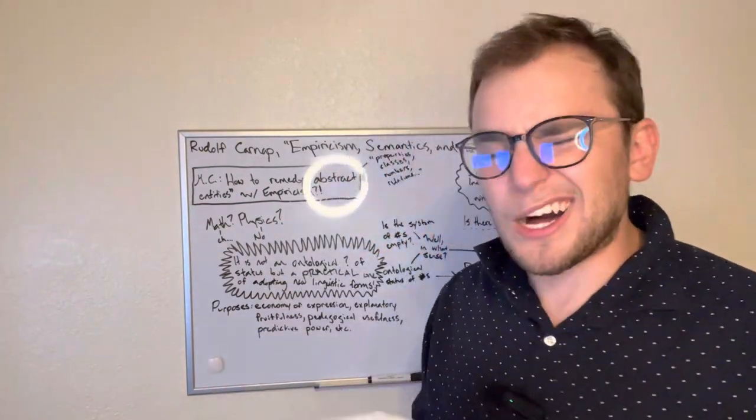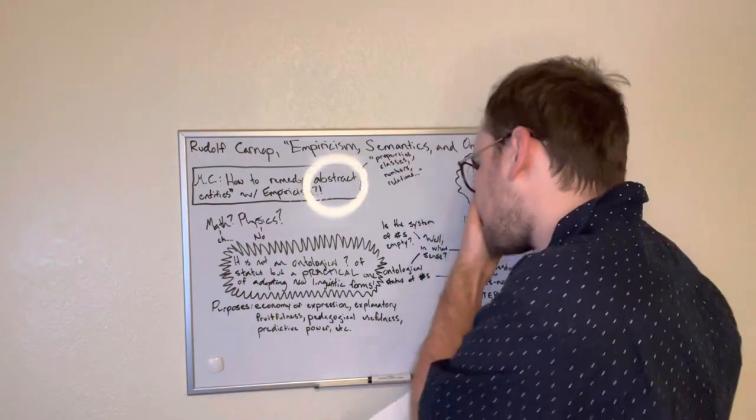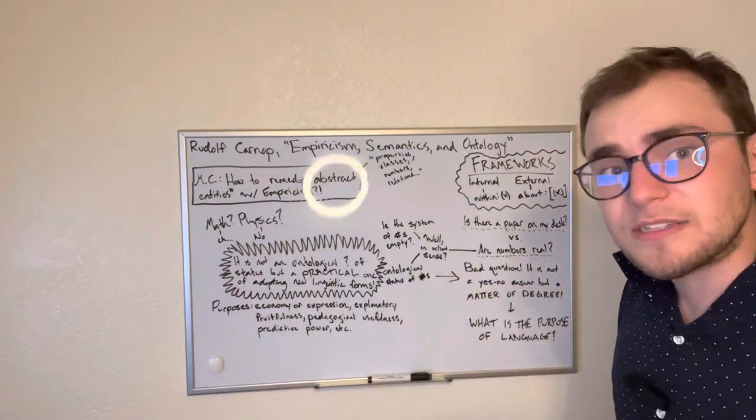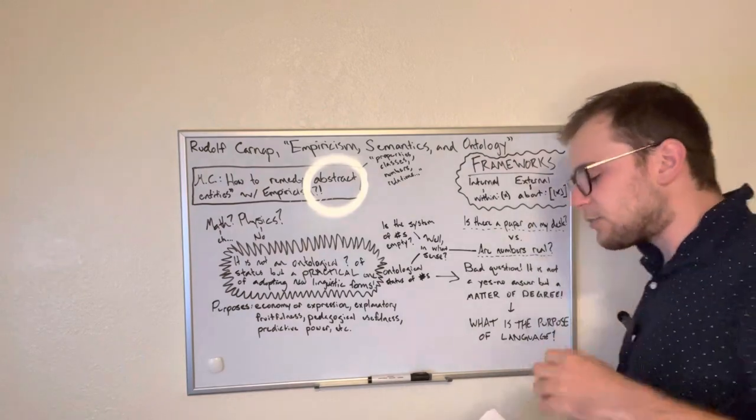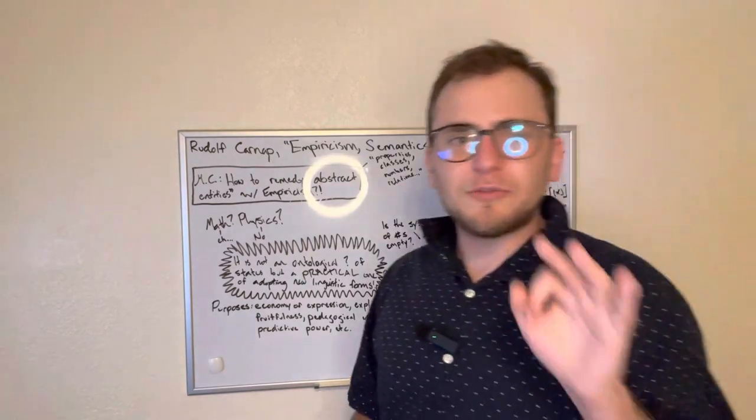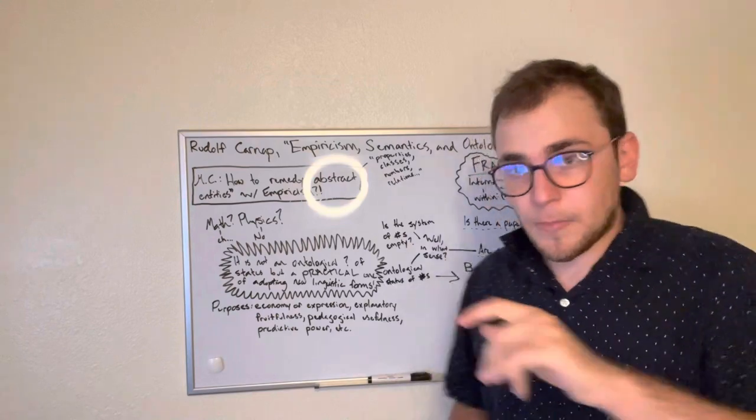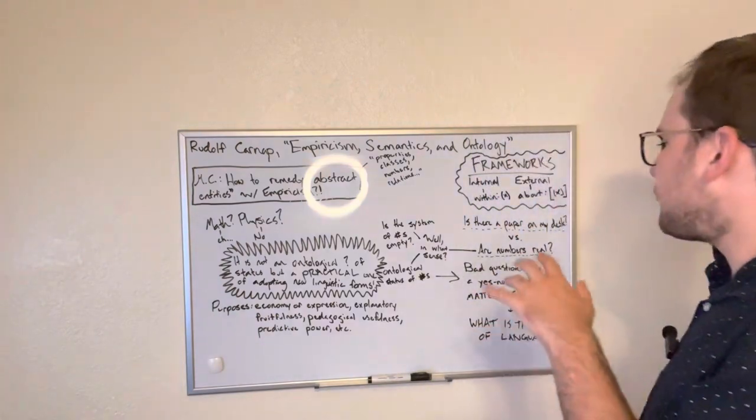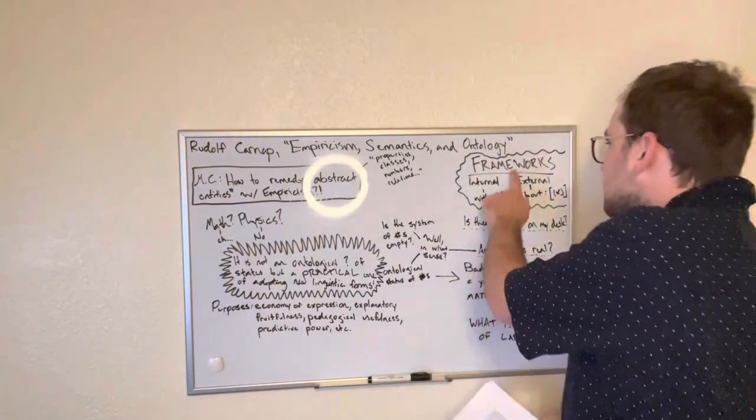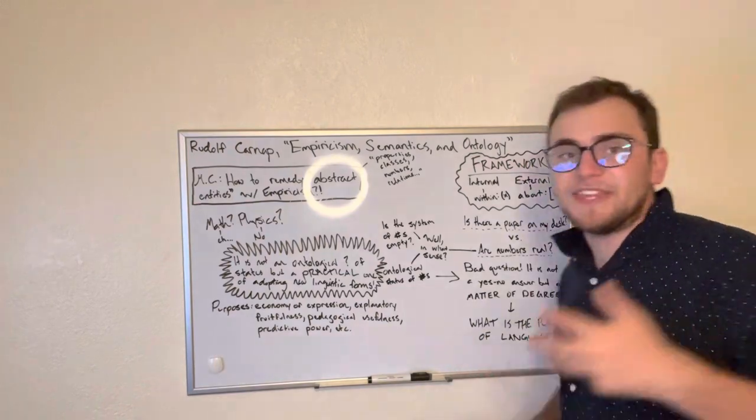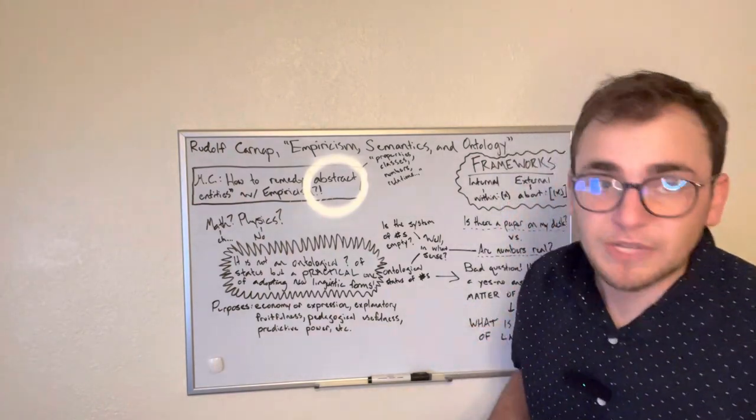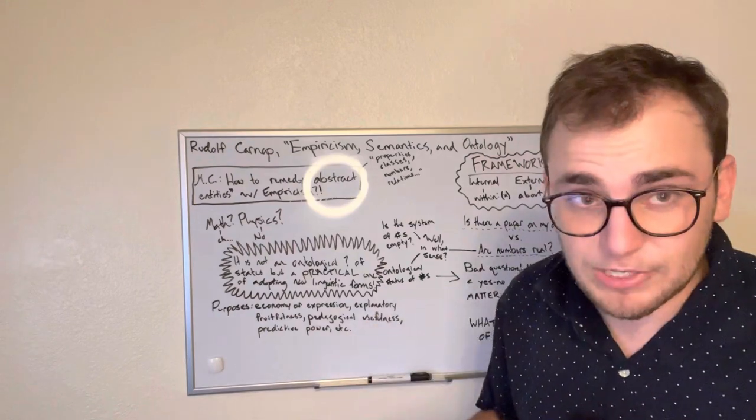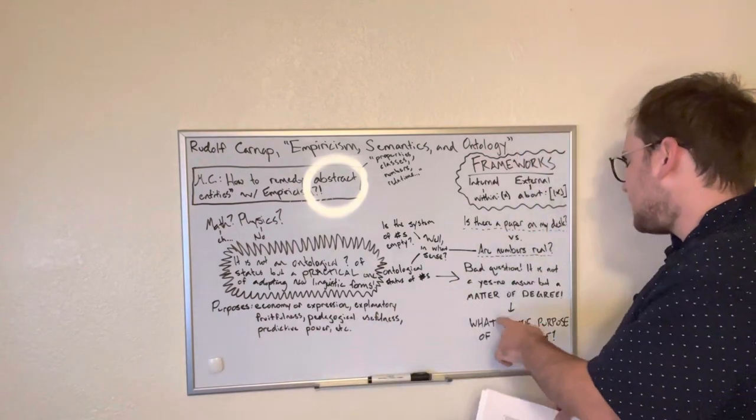And Carnap calls it an ontological question. They're talking about the ontological status of numbers. And what Carnap's going to say is this question is ultimately a bad question. Whenever we adopt these frameworks, it's not a question of yes or no as to whether or not numbers are real or the property of desk is real.